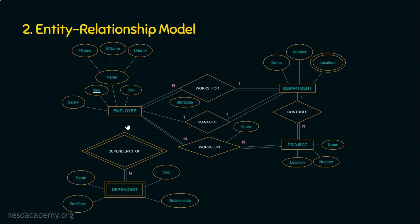Each entity is related to other entities through some relationships. The employee entity has some relationship with other entities like department and project. For example, 'works for' is a relationship, 'manages' is a relationship, and 'works on' is also a relationship. We are going to exclusively focus on database design aspects in the next chapter. So we are done with the second data model, the entity relationship model.